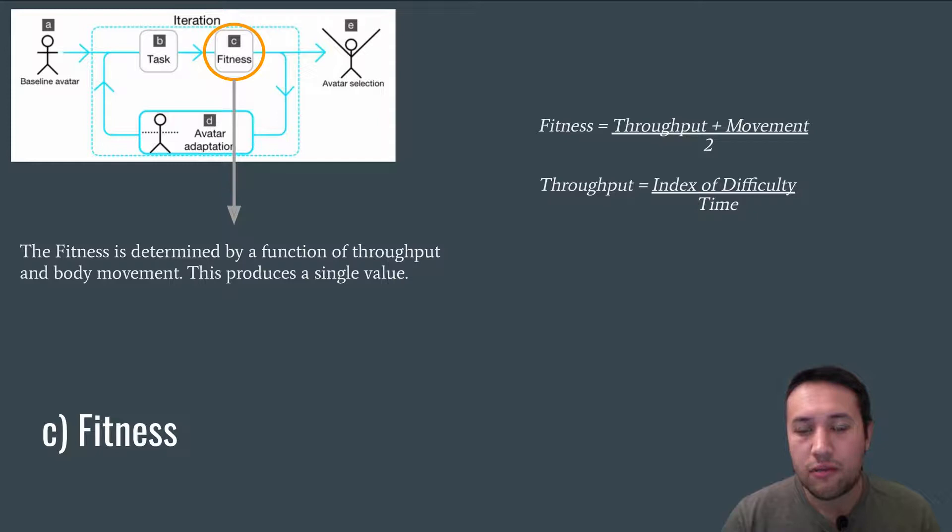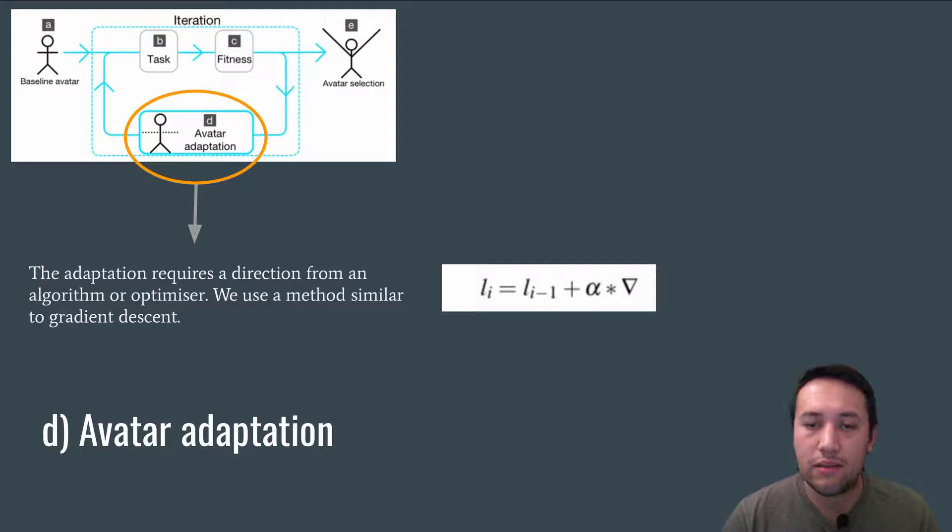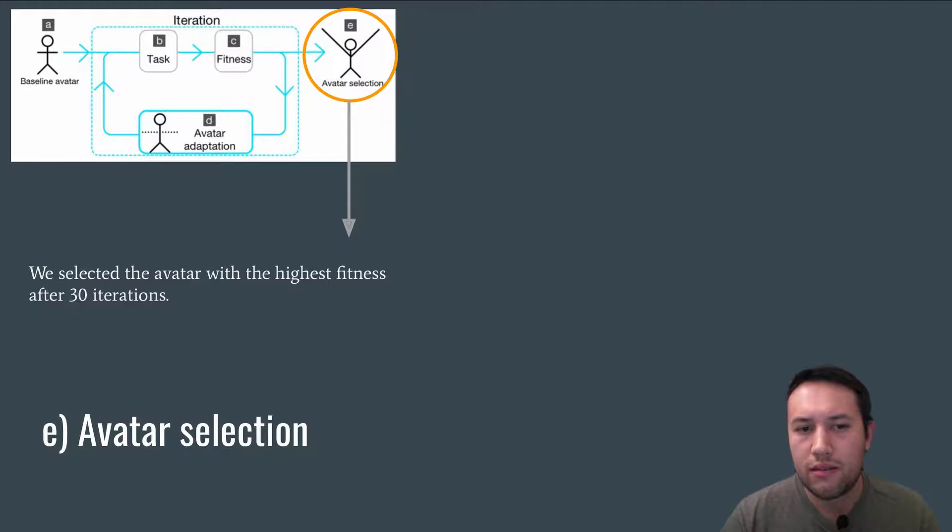For performance measures, we used throughput and body movement. We then calculated the fitness as a function of these. We used an algorithm similar to gradient descent to adapt the avatar based on the fitness delta. After 30 iterations, we selected the avatar with the highest fitness as the optimal.